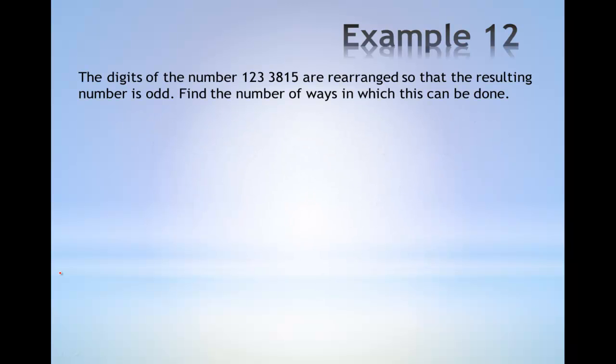Example 12. The digits of the number 1, 2, 3, 3, 8, 1, 5 are arranged so that the resulting number is odd. Find the number of ways in which this can be done.